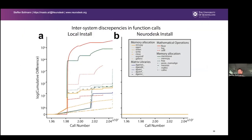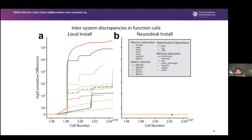In table form: for FSL flirt, NeuroDesk is 100% reproducible; local install is not quite, though the effect is small. For FSL FIRST, NeuroDesk is not 100% but 99.99999% reproducible, the difference most likely coming from hardware. When we investigated the source of differences, our hypothesis was that different glibc versions cause different system calls — and that's exactly what Tui found. System calls diverge quickly between systems with local installs, whereas on NeuroDesk the two system call traces are exactly the same across the whole runtime, which is what you want to see.